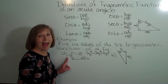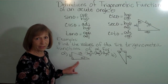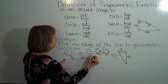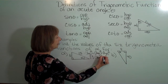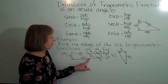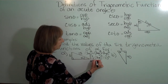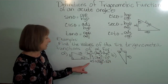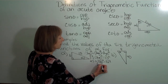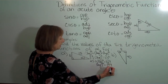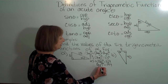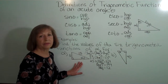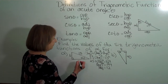In this example, 5 is a leg, the unknown value is a leg, and 13 is opposite the right angle, so that's the hypotenuse. So I have 5 squared plus the other leg squared equals 13 squared. 5 squared is 25, plus the other leg squared, equals 13 squared which is 169. Subtracting 25 from both sides, the square of the other leg equals 144. Taking the square root of both sides, the missing leg is 12. We don't need plus or minus because side lengths are always positive.